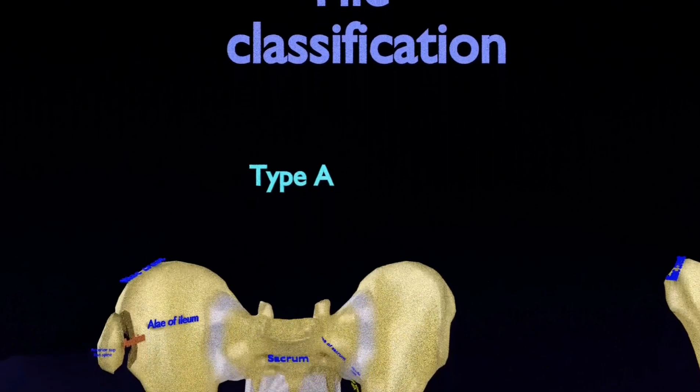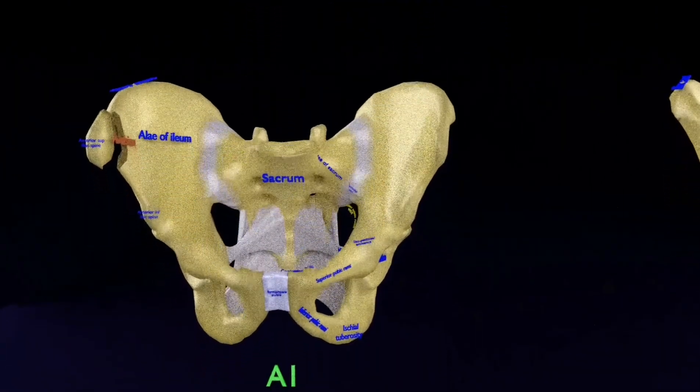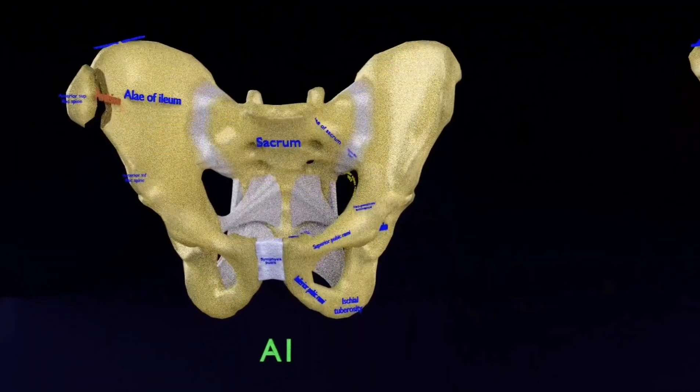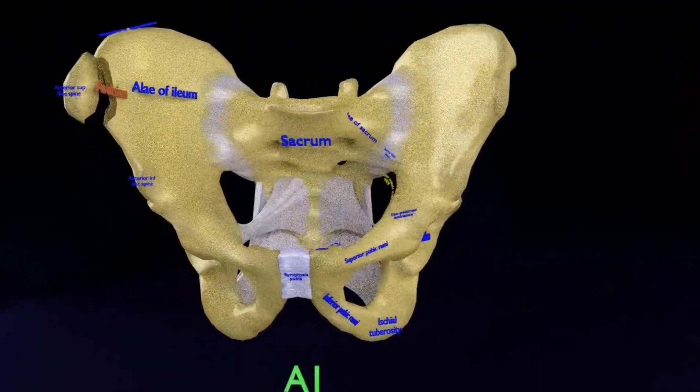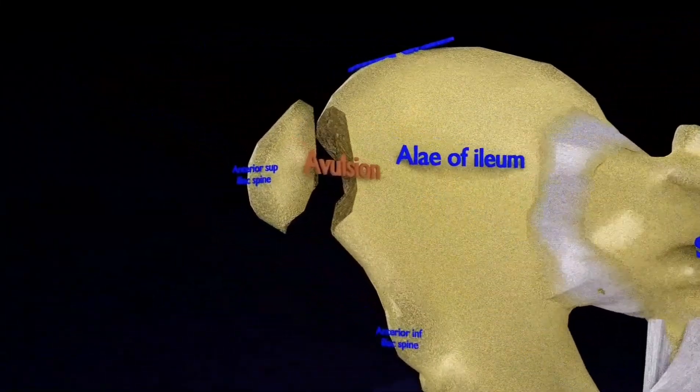The Tile classification is based on the integrity of the posterior sacroiliac complex. Here you visualize the type A. In type A injuries, the sacroiliac complex is intact. The pelvic ring has a stable fracture, posterior arch intact.